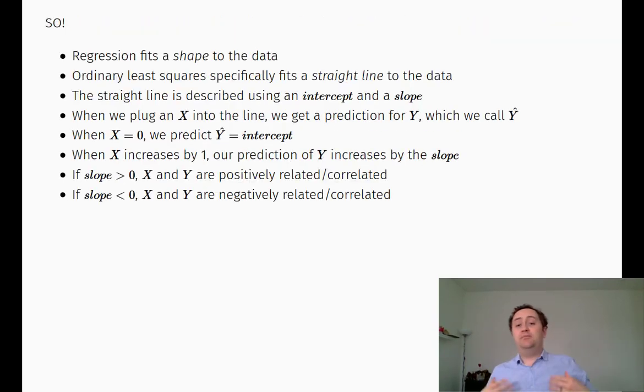So regression is a process that fits a shape to data. In this particular case of ordinary least squares, it fits a straight line. We can describe that straight line using an intercept and a slope. With that line in place, I can give you an X. You can plug it into that line equation and give me back a prediction for Y. It also tells me about the relationship between Y and X using the slope. If it's a positive slope, then that tells me that as X goes up, Y goes up as well. If it's a negative slope, that tells me that as X goes up, Y goes down. That's really all what we're interested in. We want to know the relationship between these two variables. All right. That's it. Thank you.